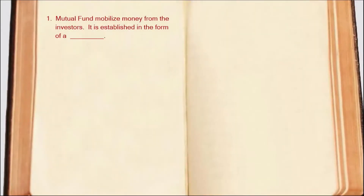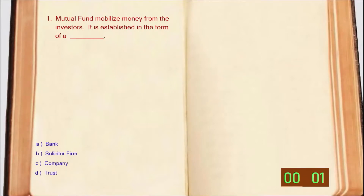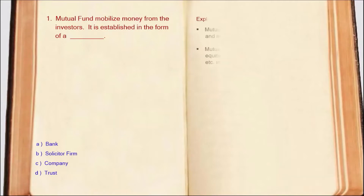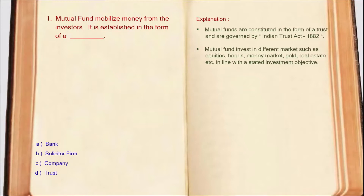Question No. 1: Mutual Funds mobilize money from investors and are established in the form of a DASH. Mutual funds invest in different asset classes like equity, bond, gold, real estate, etc. Mutual fund investors' money is managed through a trust, and mutual funds are governed by the Indian Trust Act 1882. So the correct answer is Option D: Trust.